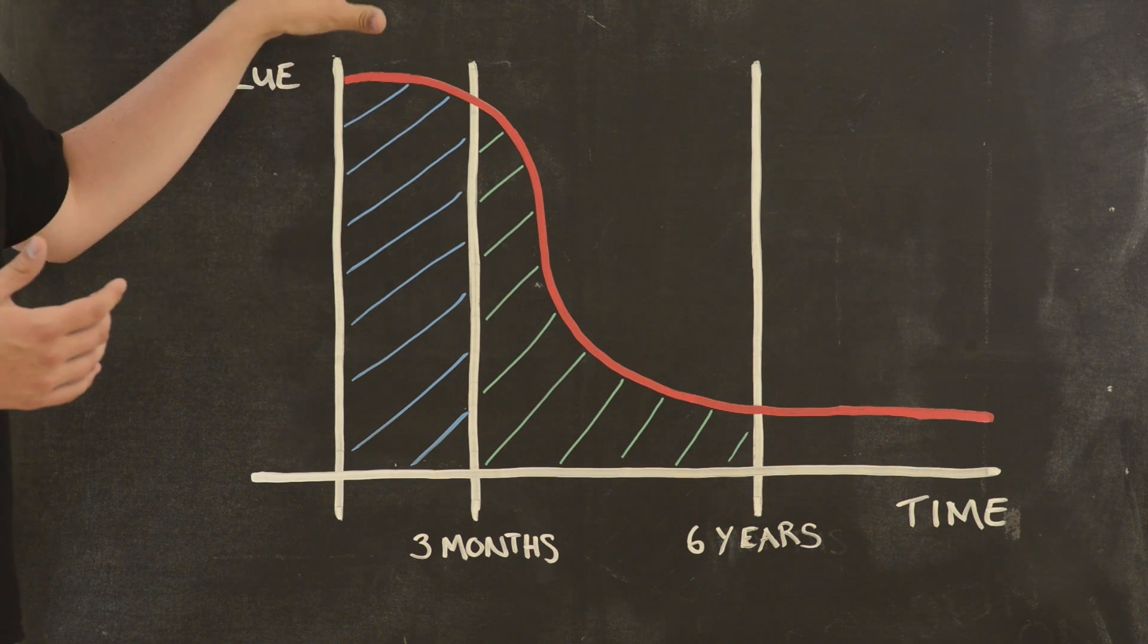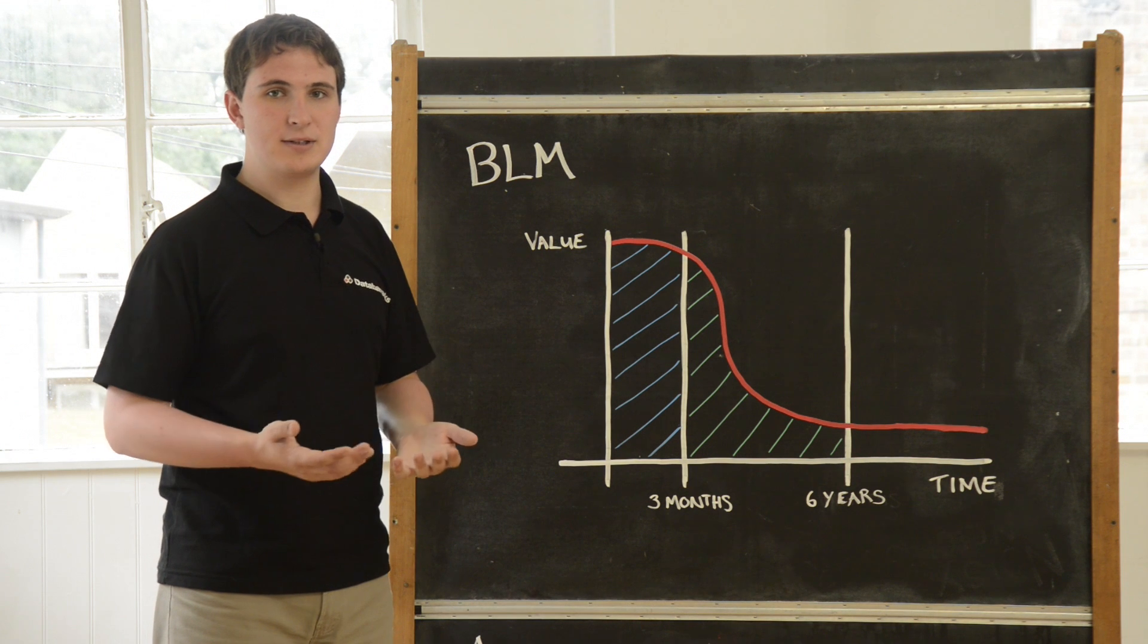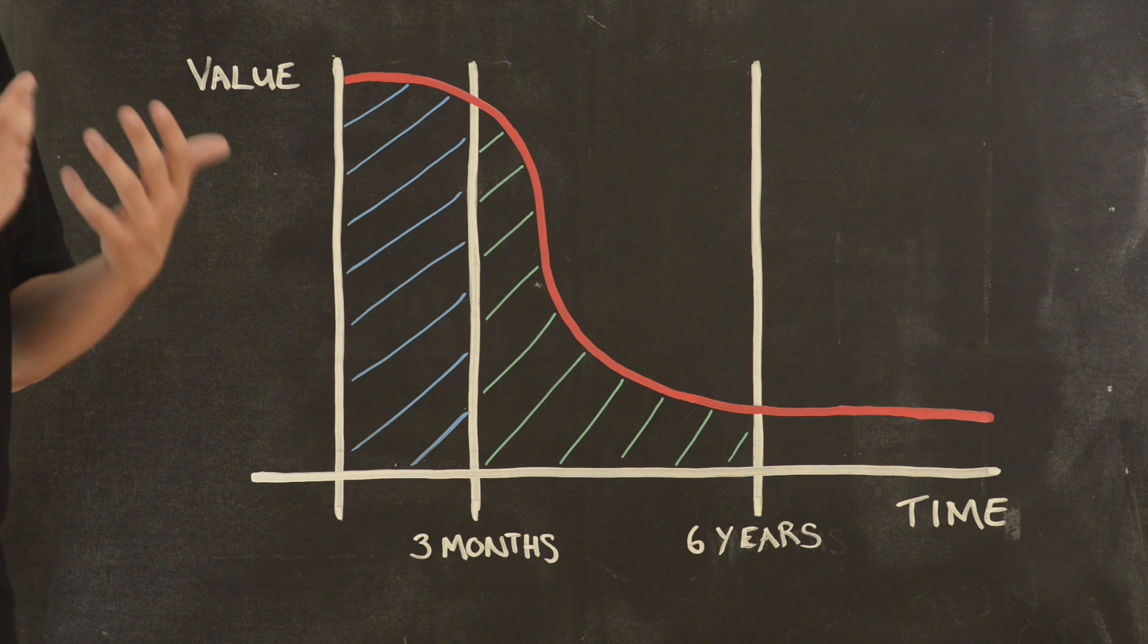BLM is where you would store long-term backups. This would be backups that you need to store for compliance reasons or for data that's more static and less critical to the business immediately.